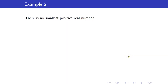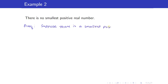Next, let us show that there is no smallest positive real number. Take note that this is a negated statement, and we want to always work with something which is not negated. So we prove by contradiction. We assume on the contrary that there is a smallest positive real number, and let's call it R.